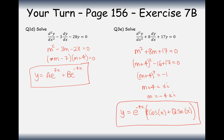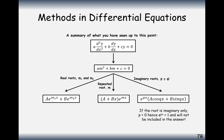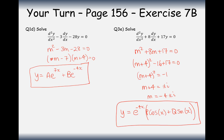So that's how we solve second order differential equations — it's basically just solving a quadratic and then applying the correct pattern for the general solution depending on the type of roots. It sounds very impressive to say you're solving second order differential equations, but it's really not too bad. Have a go at questions from exercise 7f, and in the next video we'll cover what happens when we don't have zero on the right hand side.